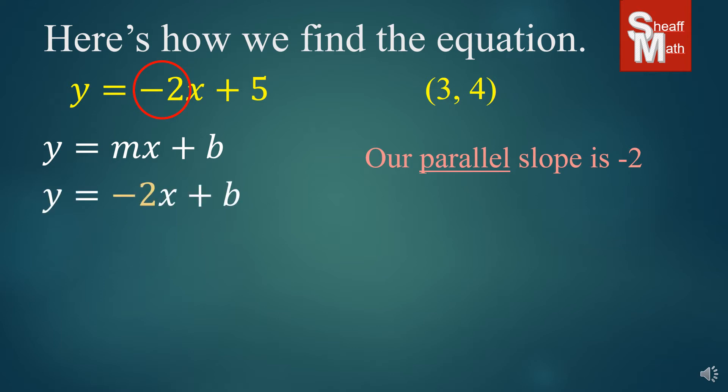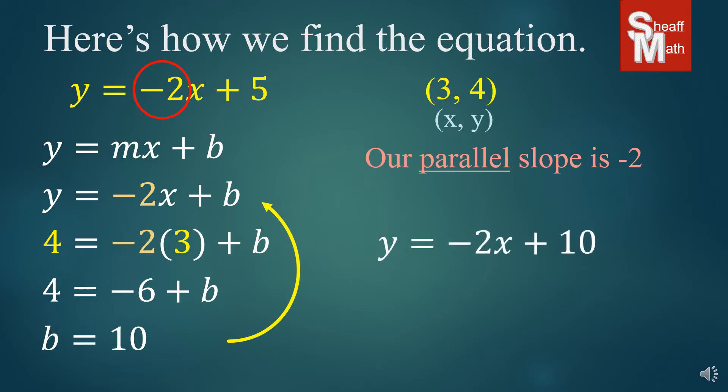We put our negative 2 in for the m. Then we're going to take our point, 3, 4, and put 3 in for x and 4 in for y. We're going to simplify and then solve for b. We get b equals 10. We're going to take that 10, put it back up into that equation that needs the b. And we have our answer, y equals negative 2x plus 10. Not so bad.